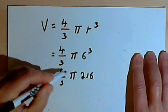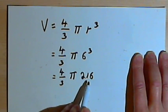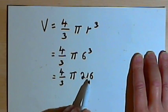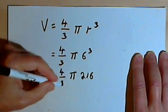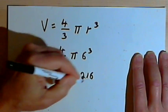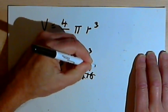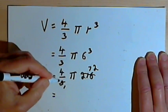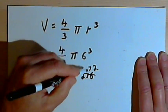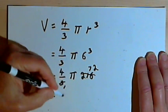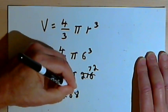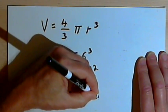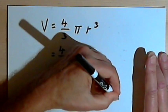Before I multiply by the 4, I think I'll divide by 3 — that might be easier. So I'm going to divide the denominator by 3, and I'll divide the 216 by 3. 216 divided by 3 would be 72. And now all I have to do is multiply 4 times 72. 2 times 72 is 144, and 2 times 144 is 288 pi cubic inches.